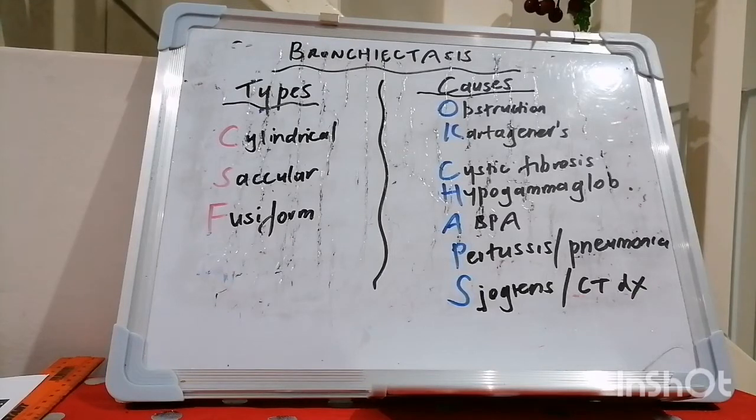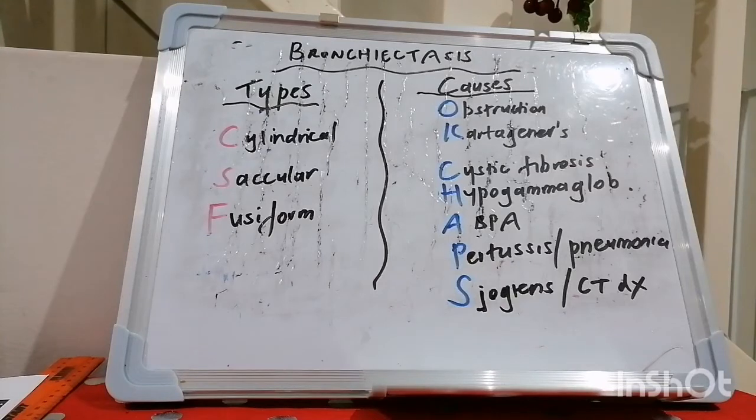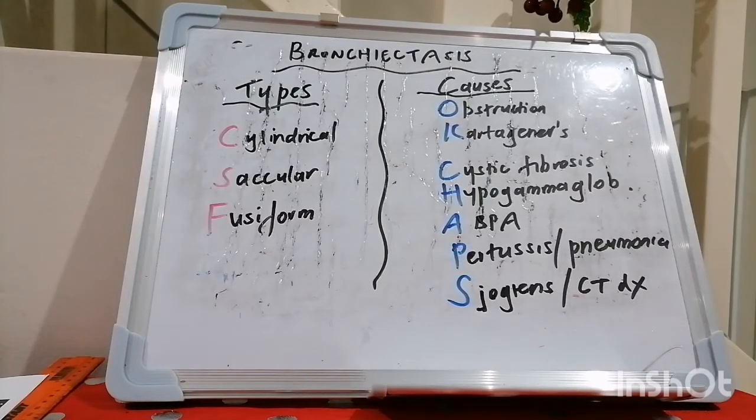Let's talk about bronchiectasis. Bronchiectasis refers to abnormal dilatation of the bronchi. As a result, they accumulate secretions and are prone to infection, which sets up a vicious cycle where more infection leads to more dilatation, which leads to more infection and more dilatation.